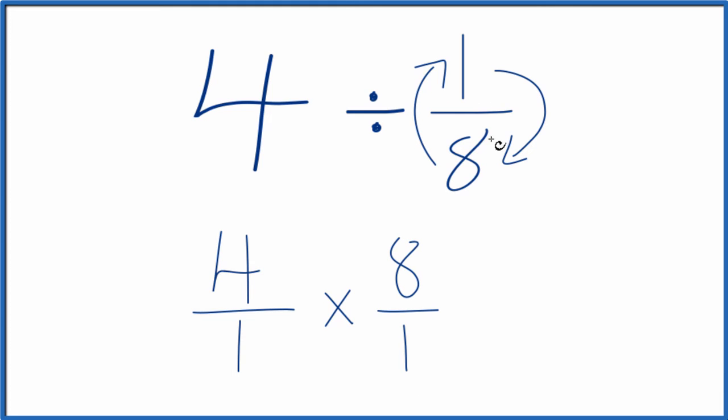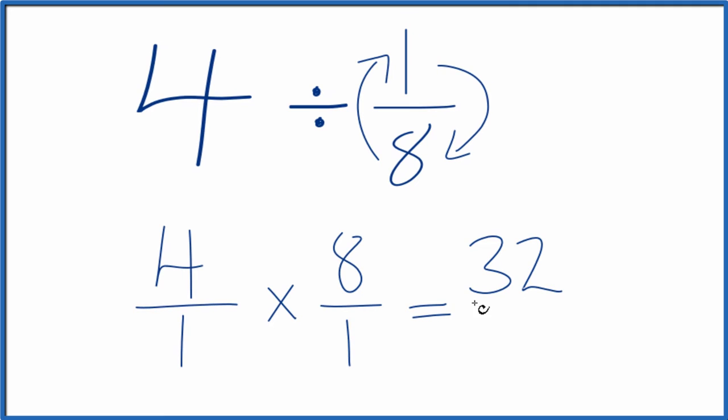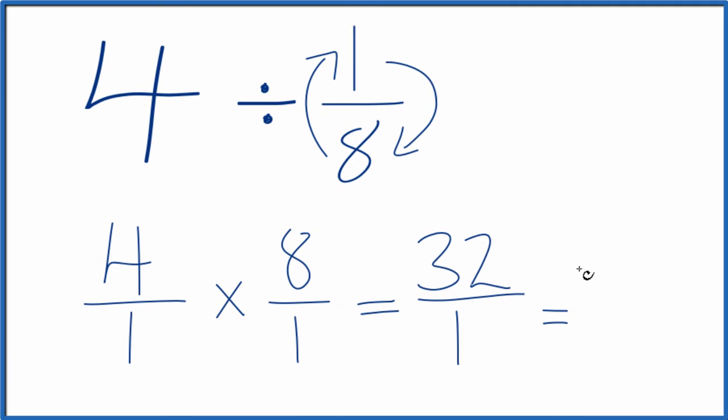8 over 1, that's the reciprocal of 1/8. When we're multiplying fractions, we multiply the numerators and then the denominators. That gives us our answer. 4 times 8 is 32. 1 times 1 is 1. And 32 divided by 1, that's just 32.